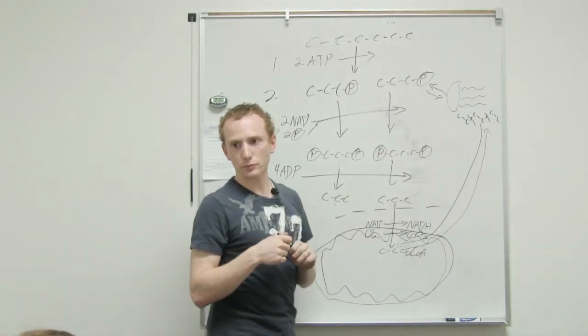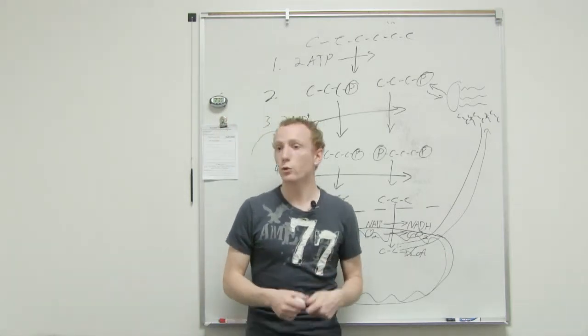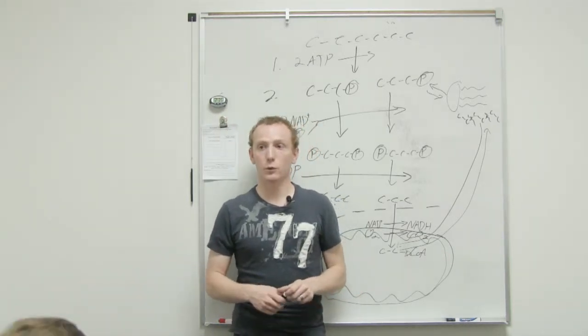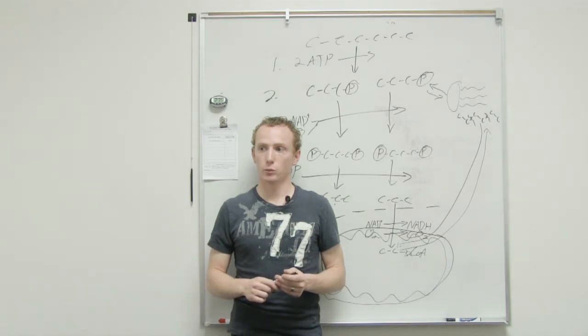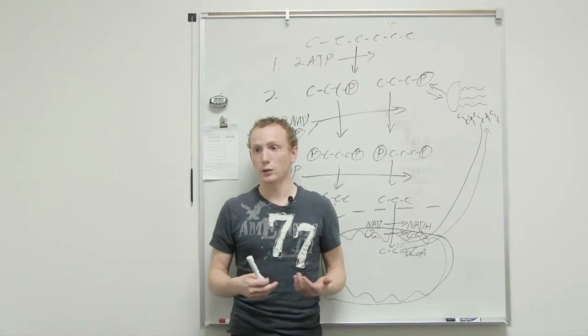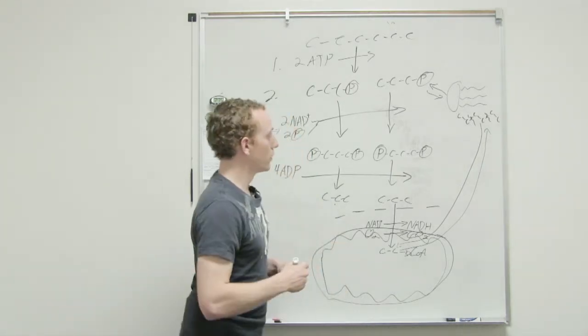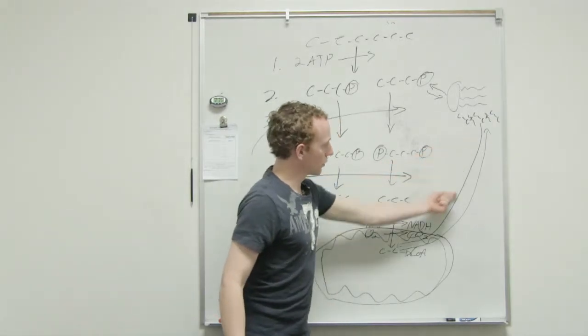So this process happens when there's not... When, for one reason or another, we're not breaking down glucose molecules anymore. Either we use the glucose, or if we're diabetic, we can't use the glucose. So what was this process called, going down?